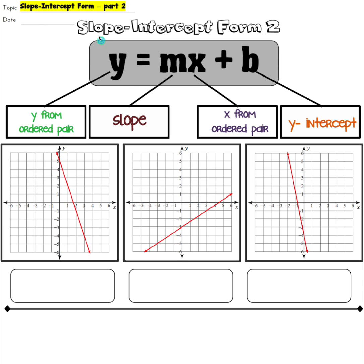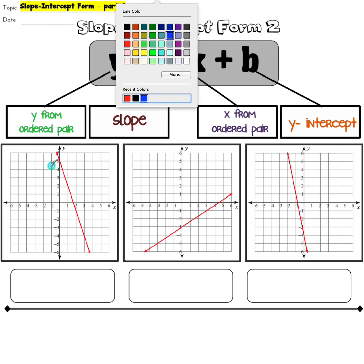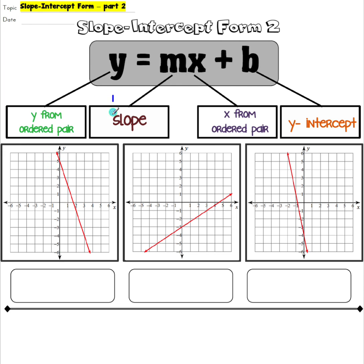Based on our previous lesson, we are going to write an equation given the graph. We are looking for our slope and our y-intercept. Our y-intercept in this case is at positive five. Our slope looks like it's going down three over one, so our slope is negative three. Plugging that in, y equals negative three x plus five.